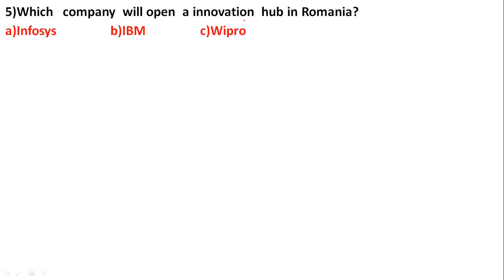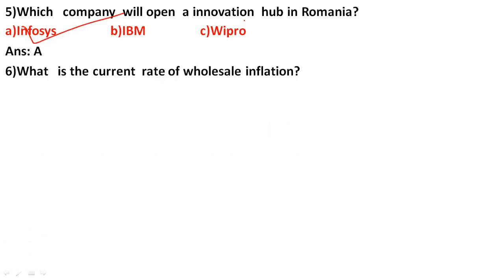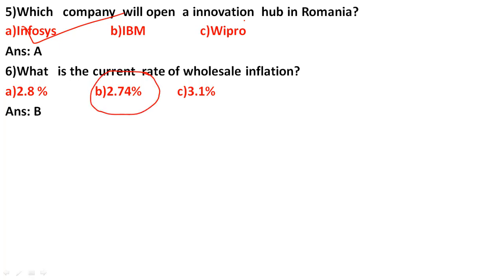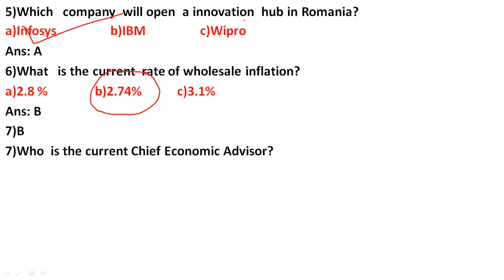The correct answer for the Innovation Hub in Romania is option A: Infosys. Next, what is the current rate of wholesale inflation? The options are 2.8, 2.74, and 3.1.